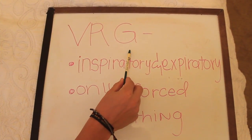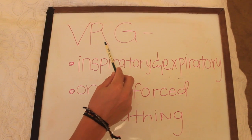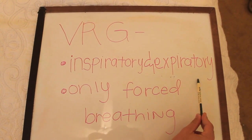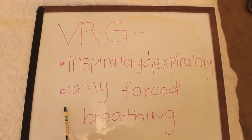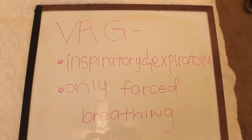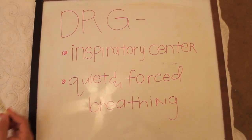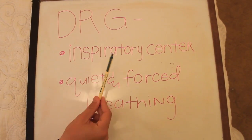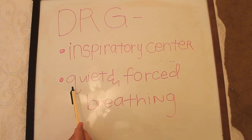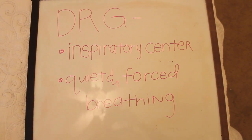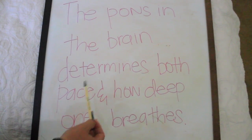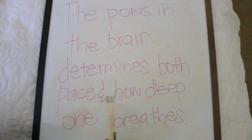The VRG, or ventral respiratory group, is an inspiratory and expiratory center, but it only operates with forced breathing. The DRG, or dorsal respiratory group, is an inspiratory center that also functions in quiet and forced breathing. The PONS in the brain determines both the pace and how deep someone breathes.